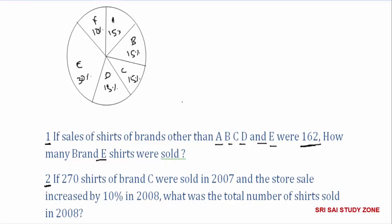Second question: If 270 shirts of Brand C were sold in 2007, and the store sale increased by 10% in 2010, find the total sales value for 2010.